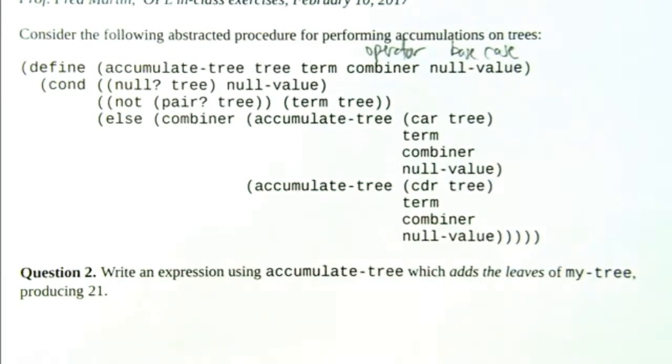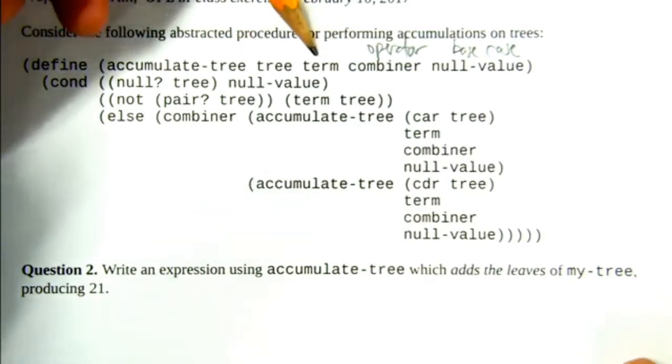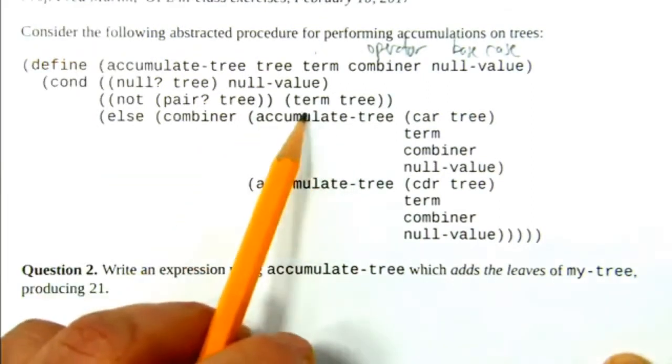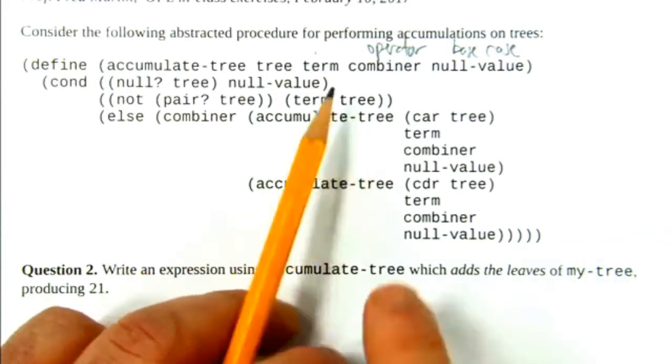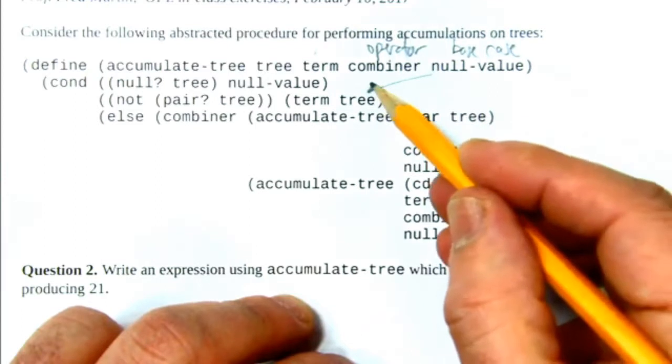So I think we're ready to do question two, which is to use this thing. So you're going to hand it some stuff. Obviously, it gets handed the tree. But then you're also going to construct a term transforming function. It should be clear that that's a function because we see it used here operating on... At this point in the recursion, what is tree here?